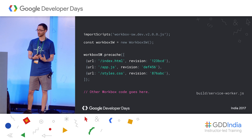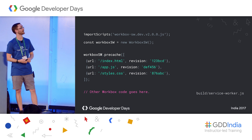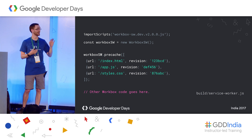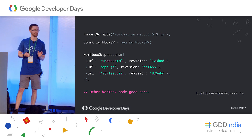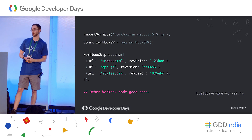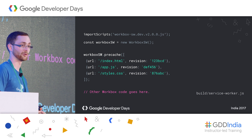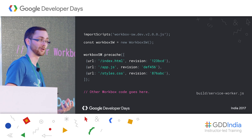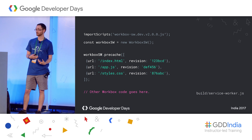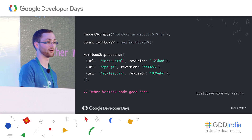Once you run Workbox from the command line, you get the outputted production service worker file. It looks exactly like the first example, except now the `precache` call has been populated with the list of URLs automatically — so we didn't have to add any of these files ourselves. When you change your app, all you need to do is rebuild it. Additionally, there's a `revision` property — a hash of your files — that lets Workbox intelligently update the cache in the browser, replacing only outdated files and avoiding the need to manually clean out old caches.